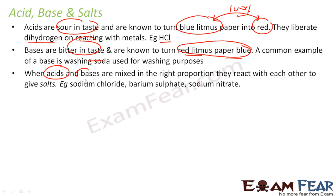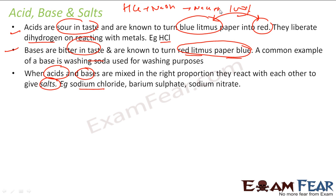When an acid and a base are mixed in the right proportion, they produce something called a salt. For example, HCl plus NaOH gives NaCl plus water — the acid and base combine to form salt. Similarly, you get barium sulfate, sodium nitrate, etc. You get a salt whenever you mix an acid and a base in the right proportion.